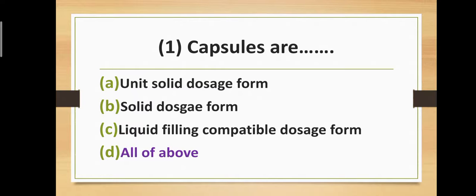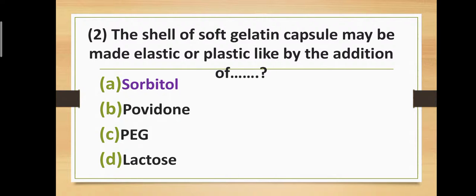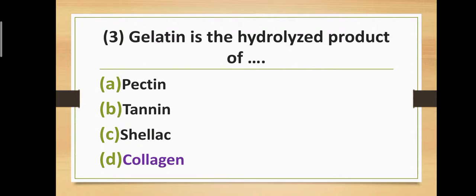Question number two: The shell of a soft gelatin capsule may be made elastic or plastic-like by the addition of — Option A: sorbitol. Option B: povidone. Option C: PEG. Option D: lactose. The correct answer is option A — sorbitol. The shell of a soft gelatin capsule may be made elastic or plastic-like by the addition of sorbitol.